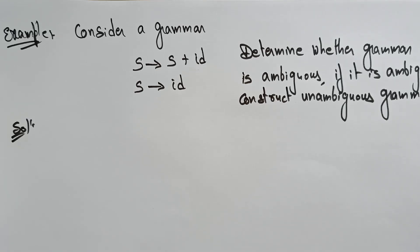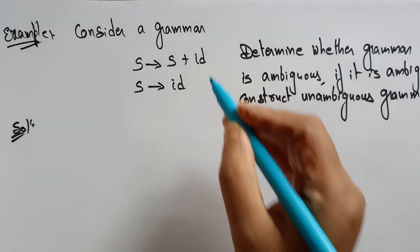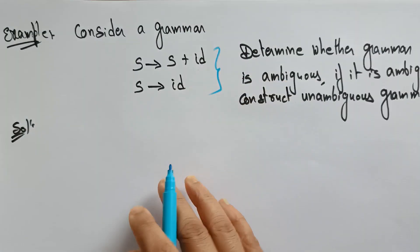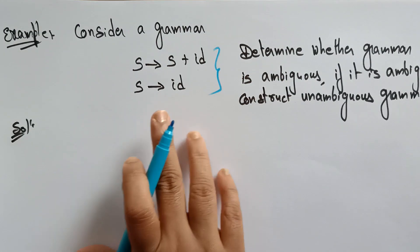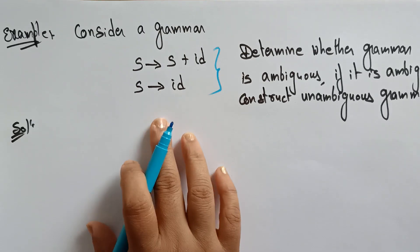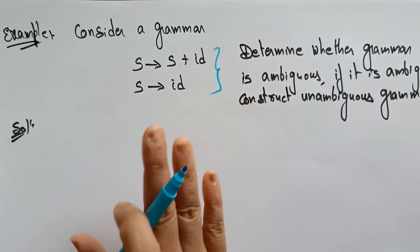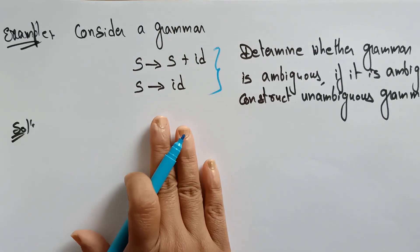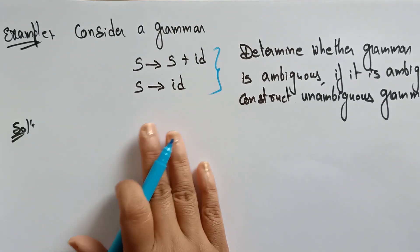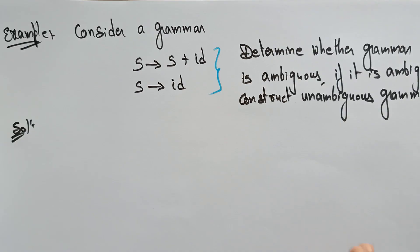Hi students, welcome back. Now let's see another example here. In this example, I need to check whether the grammar they are given is ambiguous or not. If it is an ambiguous grammar, we have to construct an unambiguous grammar.